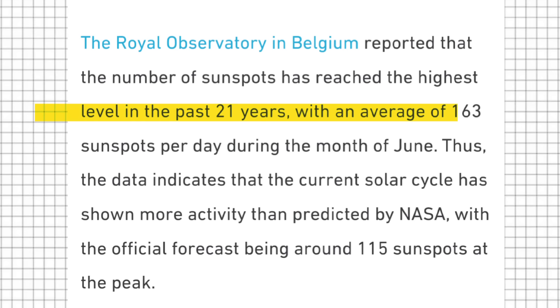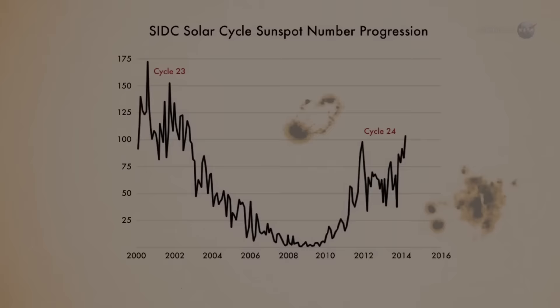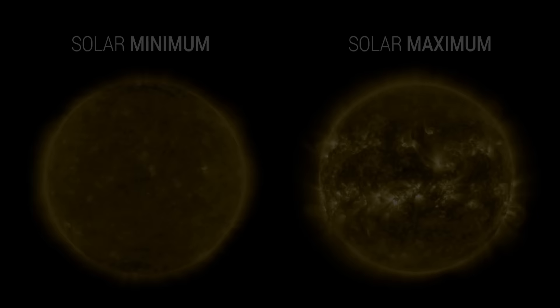The Royal Observatory in Belgium reported that the number of sunspots has reached the highest level in the past 21 years, with an average of 163 sunspots per day during the month of June. Thus, the data indicates that the current solar cycle has shown more activity than predicted by NASA, with the official forecast being around 115 sunspots at the peak.